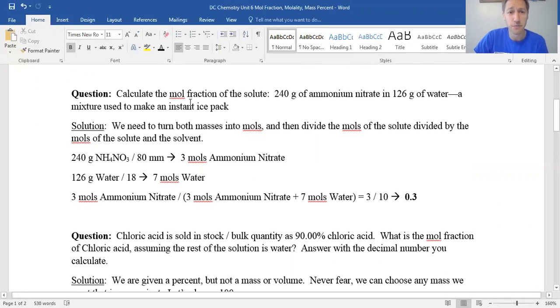Question: calculate the mole fraction of the solute. So 240 grams of ammonium nitrate and 126 grams of water, a mixture used to make an instant ice pack. So again, basically a cold pack, the way it works sometimes is they take salt and they dissolve it into water and the temperature drops as it dissolves endothermically.